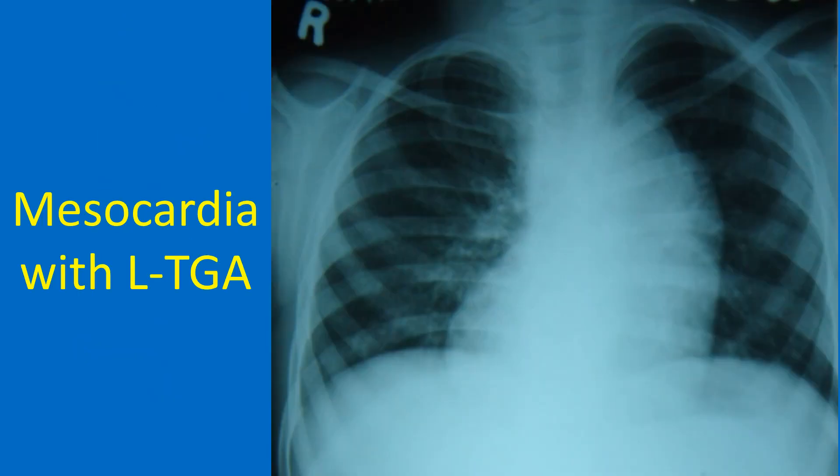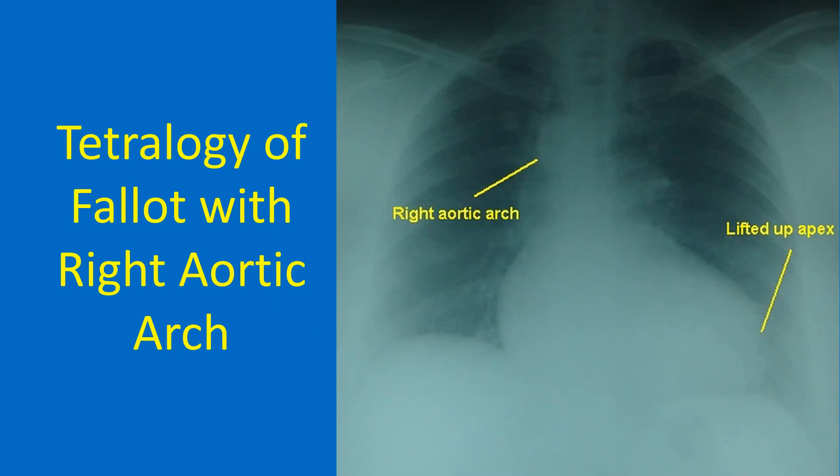Here is a chest X-ray in mesocardia and levo-transposition of great arteries, with an L-post aorta seen as a bulge along the left upper border. Here is another chest X-ray showing right aortic arch in tetralogy of Fallot and a lifted-up right ventricular type of apex. In both these cases, the visceral situs is solitus, as the stomach air bubble is on the left side and liver shadow on the right side.